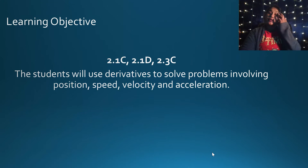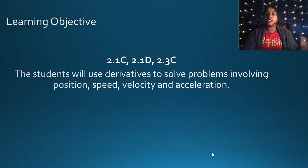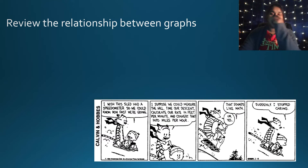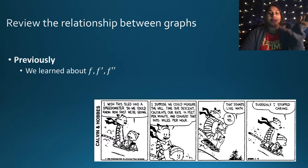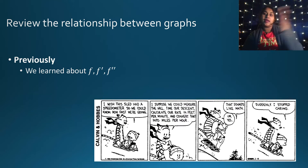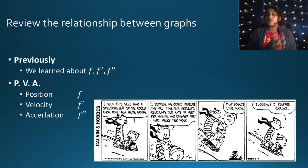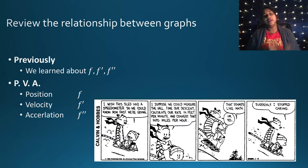Today you're going to be using derivatives to solve problems, including position, velocity, speed, and acceleration. This is the same relationship we've seen before with F, F prime, and F double prime. Position is our function, velocity is our first derivative, and acceleration is our second derivative.